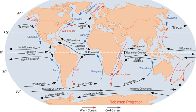Knowledge of surface ocean currents is essential in reducing costs of shipping, since traveling with them reduces fuel costs. In the wind-powered sailing ship era, knowledge of wind patterns and ocean currents was even more essential. A good example of this is the Agulas current, down along Eastern Africa, which long prevented Portuguese sailors from reaching India.